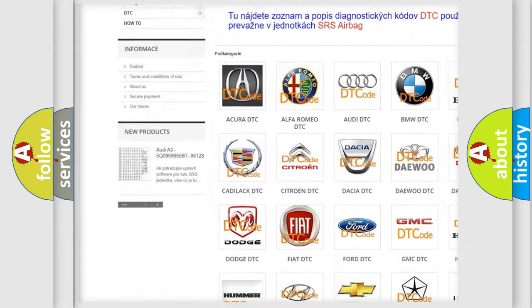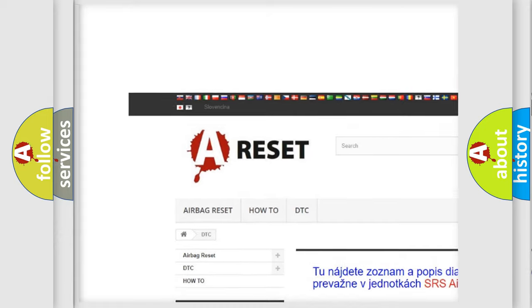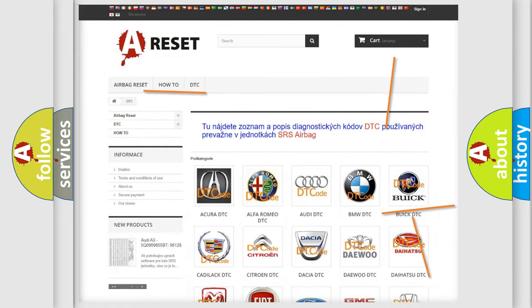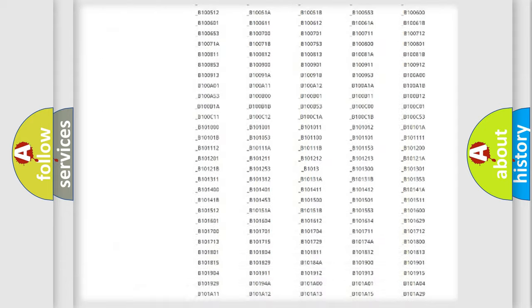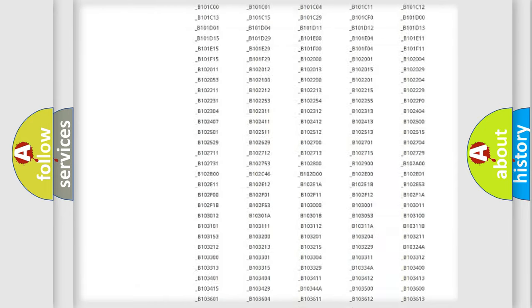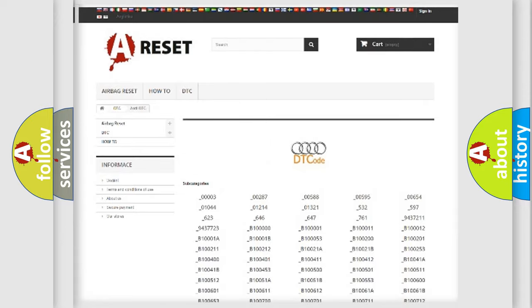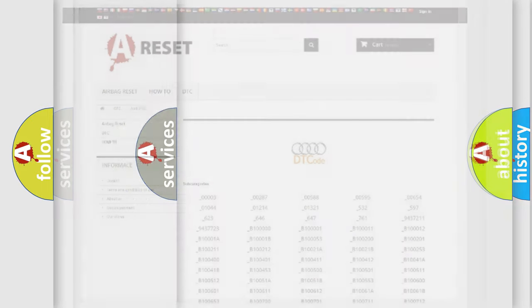Our website airbagreset.sk produces useful videos for you. You do not have to go through the OBD2 protocol anymore to know how to troubleshoot any car breakdown. You will find all the diagnostic codes that can be diagnosed in a car, including Audi vehicles and many other useful things.